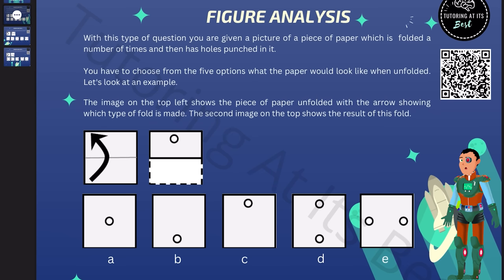Now, a trap that people often fall into is forgetting that if a piece of paper has been folded, the shapes on the folded side will come out upside down once it has been unfolded.